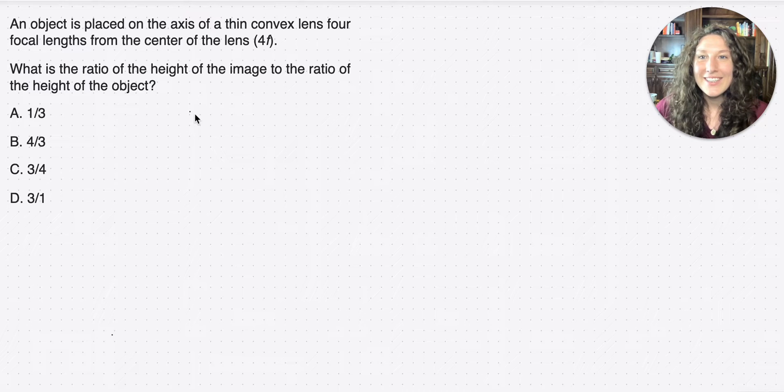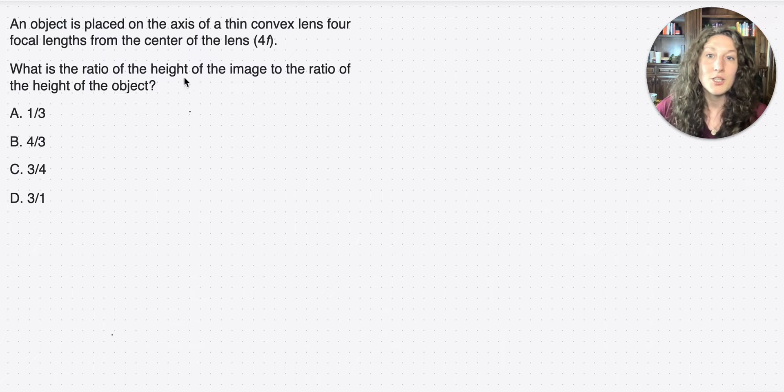Okay, so the first step for this question is to write out the Thin Lens Equation. How do we know? Because they're telling us an object is placed on an axis of a thin convex lens, four focal lengths from the center, and then we're asked the ratio of the height of the image to the ratio of the height of the object.